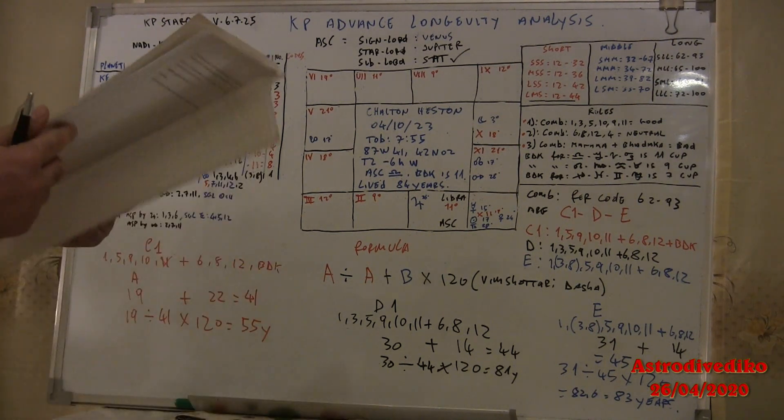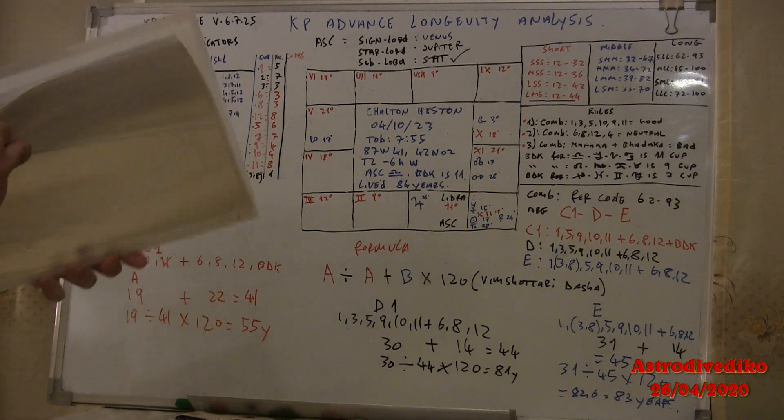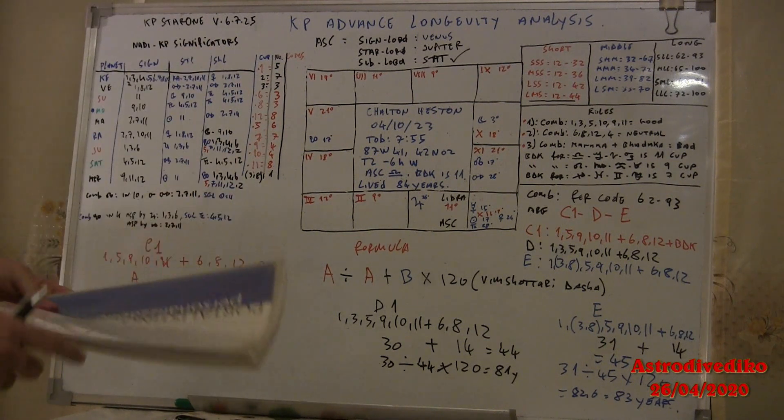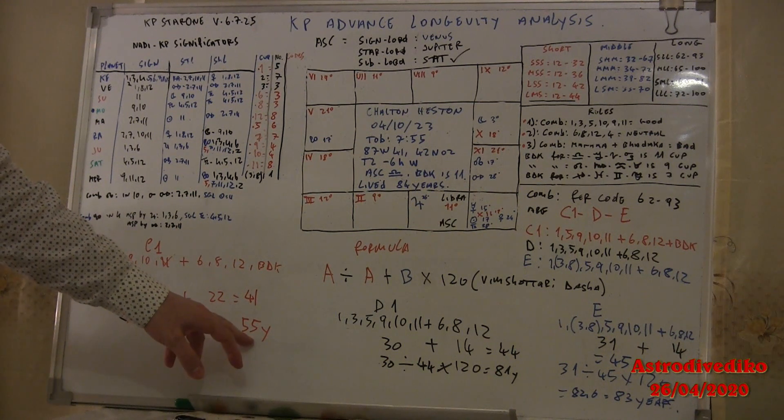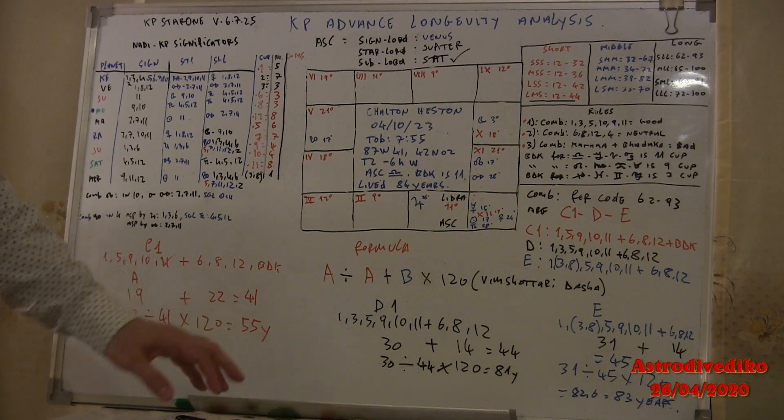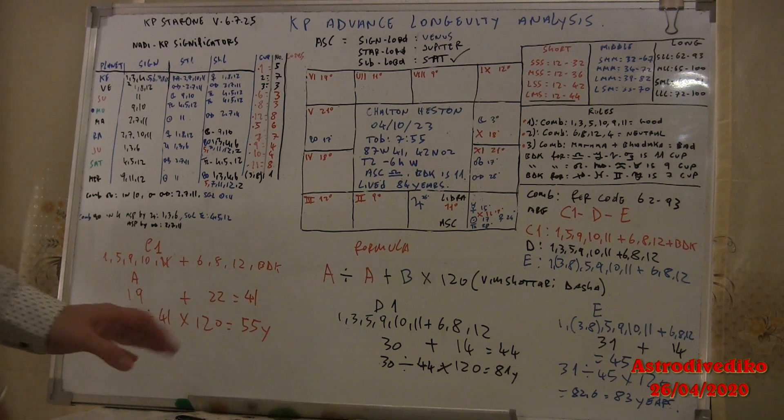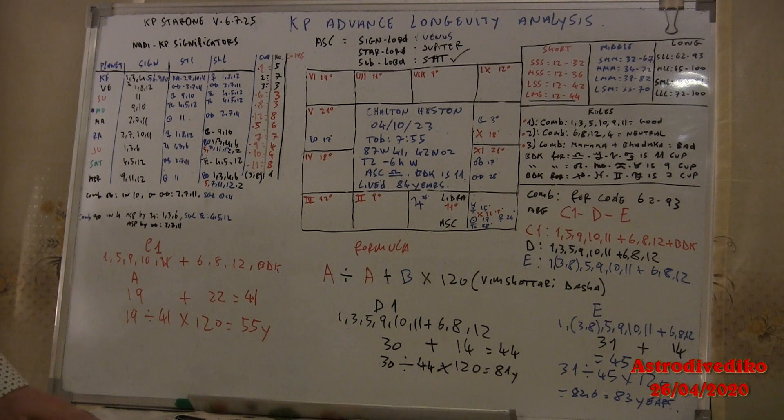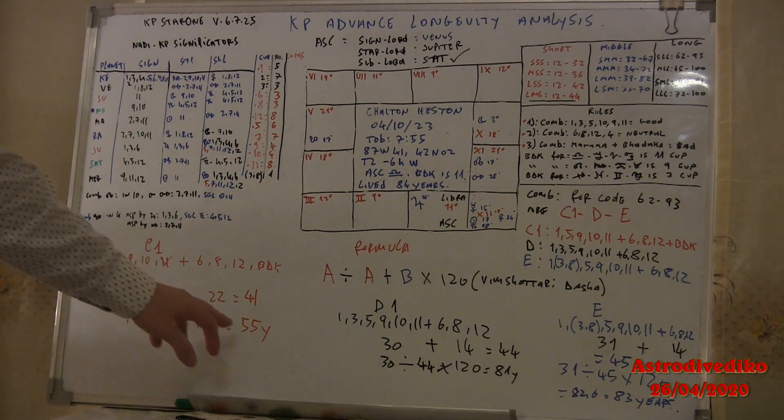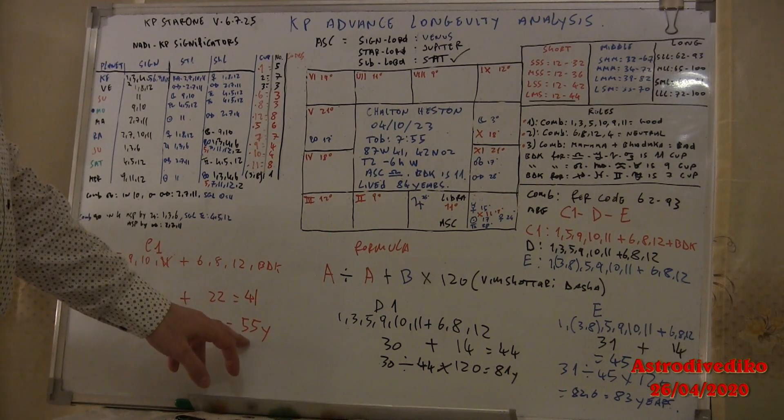So 19 divided by 41 multiplied by 120 years of Vimshottari Dasha, you get 55 years. Now in the article I made some mistakes. It was not 55, in the article I wrote 53, but important you have the idea of my method.